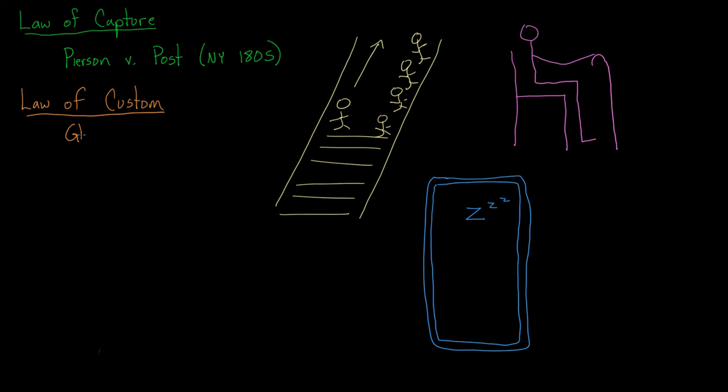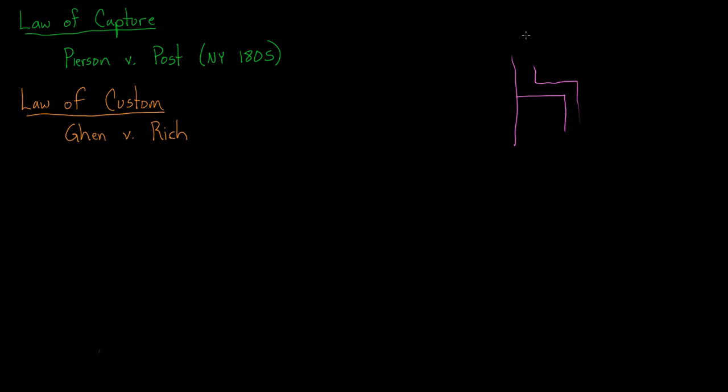Property law is made by society and is used by the courts, and we call this custom law. The case of Ghen v. Rich basically gives us a rule that helps courts figure out when to enforce common social behaviors or customs. In other words, custom law tells us when to make these customs official in a court of law.